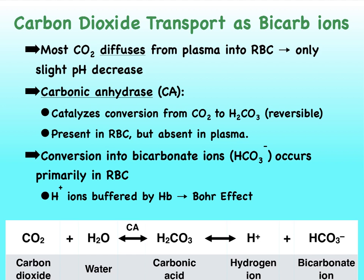Let's continue focusing on this reaction — I'm showing it near the bottom of your screen. When gas exchange occurs between our alveoli and our blood or between the tissues and our blood, the carbon dioxide is going to very quickly diffuse from the plasma into our red blood cells. In the red blood cells, this reaction can occur as well, but it occurs much faster because the conversion of carbon dioxide and water into our unstable carbonic acid molecule is going to be catalyzed by an enzyme called carbonic anhydrase.